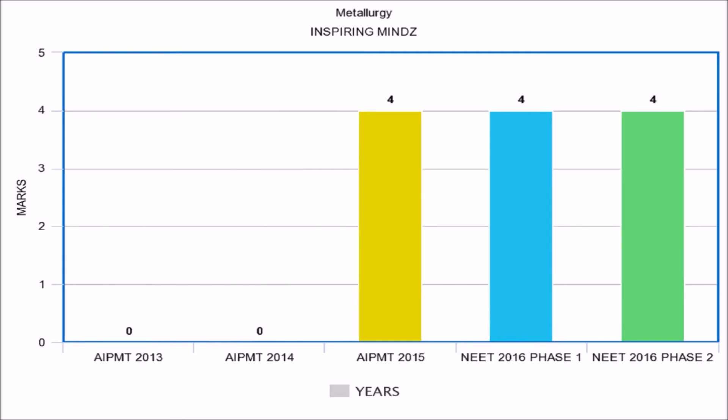Metallurgy is the easiest topic. In AIPMT 2013 and 2014 no questions were asked from this chapter, while in AIPMT 2015 and NEET 2016 Phase 2 the weightage was 4 marks.